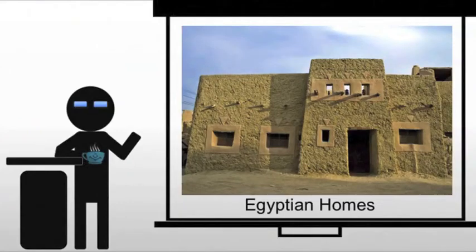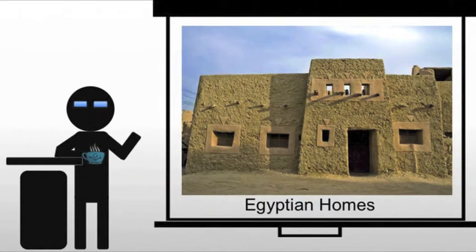We can't talk about interior design without talking about the form of the homes. There are two kinds of homes I want to look at. I want to look at the palaces, the upper crust, but I also want to look at the common man. Oftentimes those homes are overlooked, and yet they're particularly important because that's how most people are living, and it may give you some ideas that you wouldn't have otherwise.